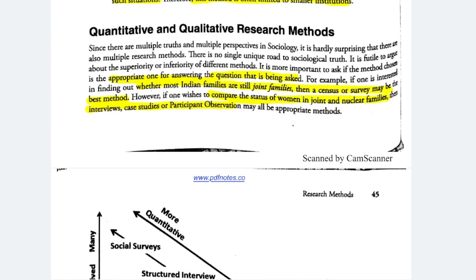Hi everyone, welcome to Karan Crunch. In this series, we are covering Nitin Sangwan Sir's Essential Sociology. We have already completed Chapter 1 and Chapter 2, and currently we are doing Chapter 3, which is Research Methods. The introduction of Research Methods and its significance we have covered in the last video. Today, we will see what is Quantitative and Qualitative Research Methods.